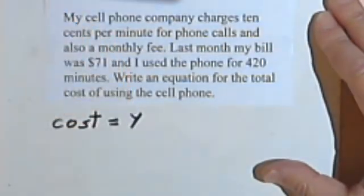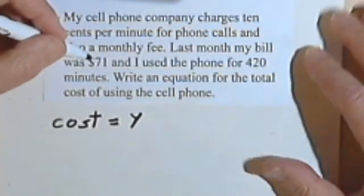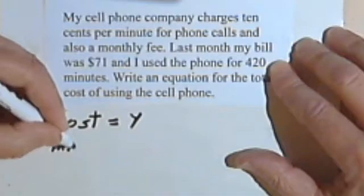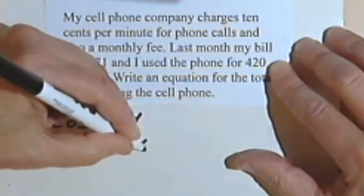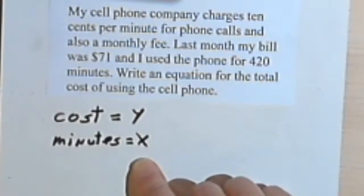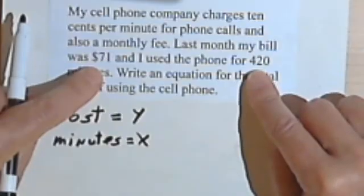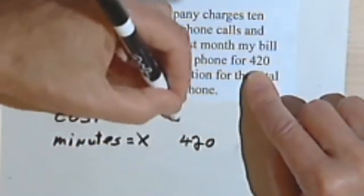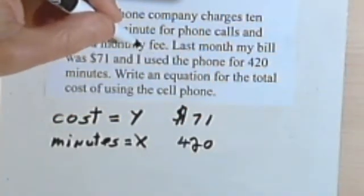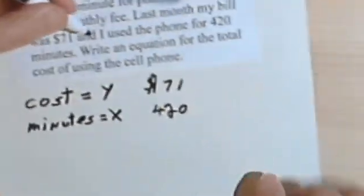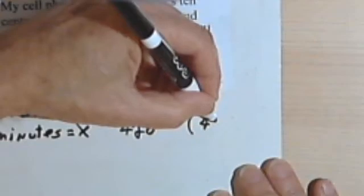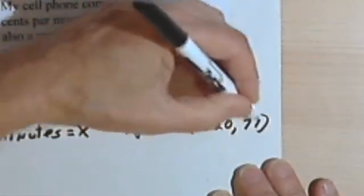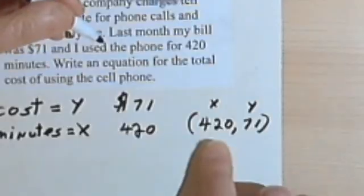I'm looking for the cost, so I'll make that my Y, and the two things that are affecting the cost is the basic fee plus how many minutes I use the phone. So for minutes, since the minutes are changing, they're variable, we'll make that an x. And the other information I have is that when I use the phone for 420 minutes, it cost me $71. So 420 is an x and 71 is a y. So as in the previous problem, I can write this as an ordered pair, and that will give me an xy ordered pair, a point on the line.